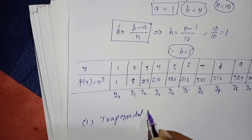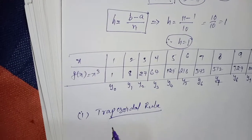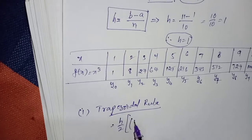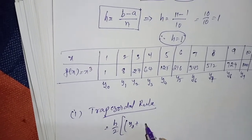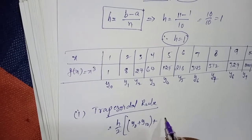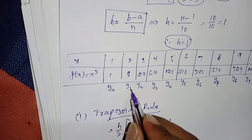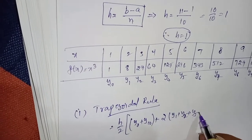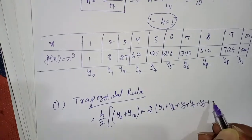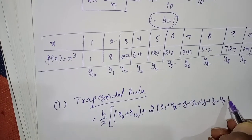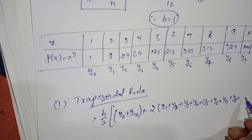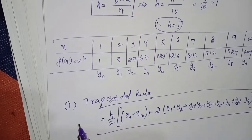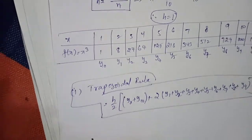The trapezoidal rule formula is: (h/2) × [y₀ + y₁₀ + 2(y₁ + y₂ + y₃ + y₄ + y₅ + y₆ + y₇ + y₈ + y₉)]. Substitute the values into this formula accordingly.